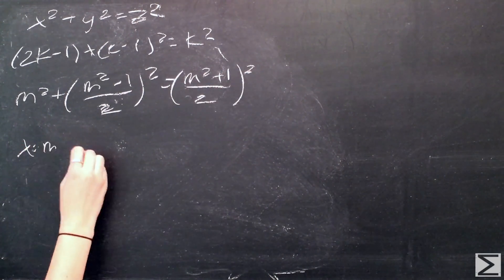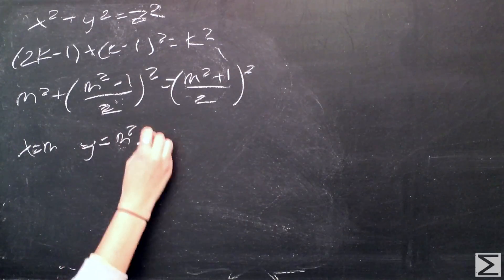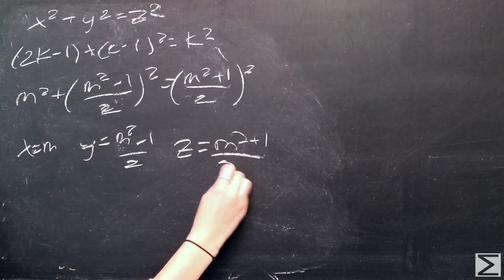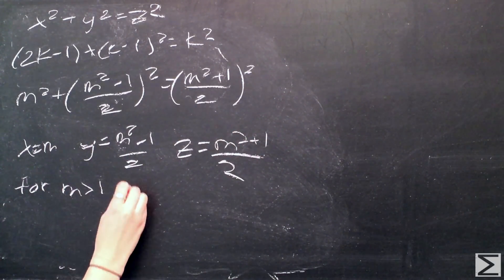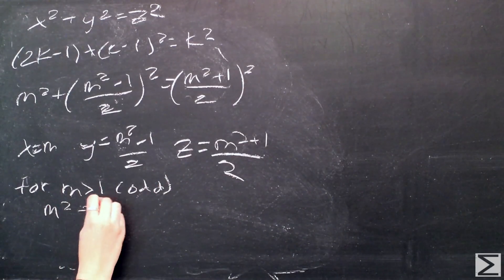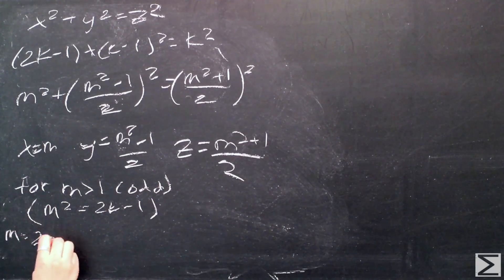What we see here is that x is equal to M, y is equal to M squared minus 1 over 2, and z is equal to M squared plus 1 over 2, which satisfies the Pythagorean equation for any odd integer M.